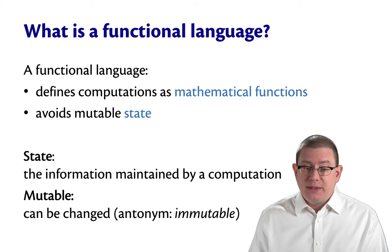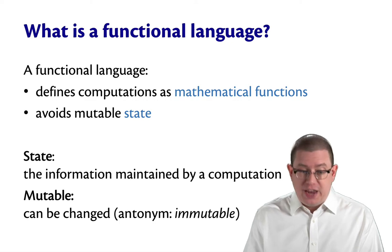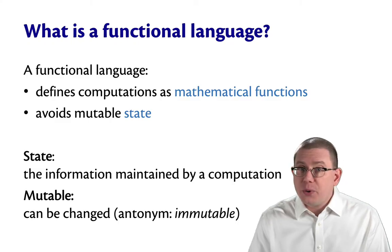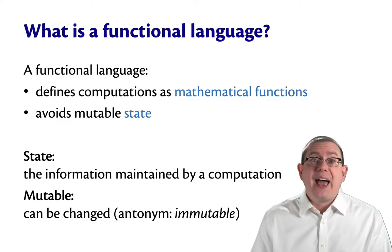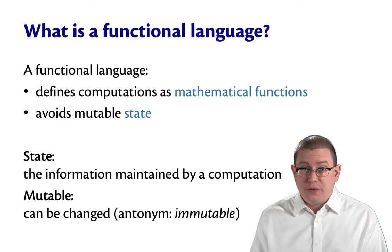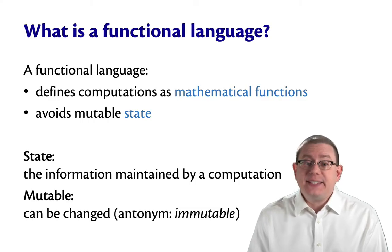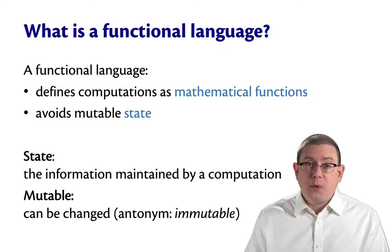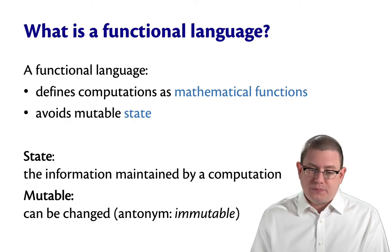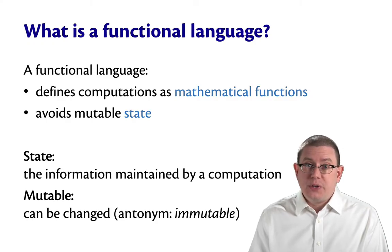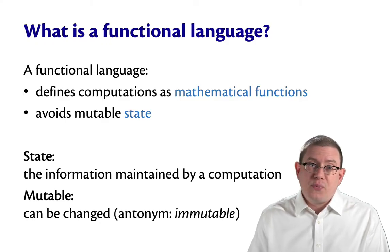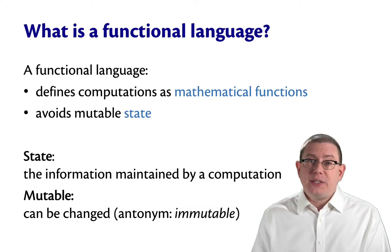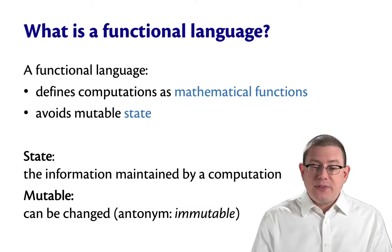Mutable state is state that can be changed. One instant in a computation, the state is one thing, and another instant in the computation, the state has evolved and changed. That change is the essence of mutability. The antonym for mutable, by the way, is immutable. So functional languages avoid mutable state. They embrace immutability, and they do so by expressing computations as mathematical functions.